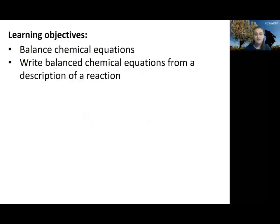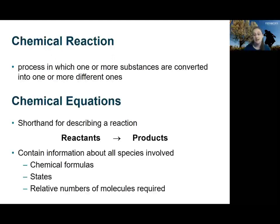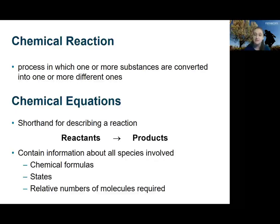In this video we will introduce the idea of the chemical equation and how it represents a chemical reaction, and then discuss how to balance those equations. A chemical reaction is the process where one or more substances are converted into one or more different ones. This means that we're going to be rearranging the atoms in the initial substance or substances to create something that's an entirely new material. In chemistry, this process is represented by a chemical equation.